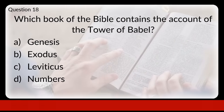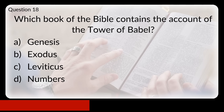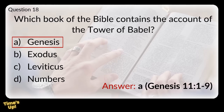Question eighteen: which book of the Bible contains the account of the Tower of Babel? Is that Genesis, Exodus, Leviticus, or Numbers? The answer is A, Genesis.